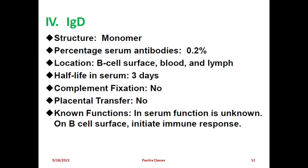IgD has a monomer structure. Its serum antibody percentage is 0.2%. Location is blood and lymph, and B cell surface. Half-life in serum is 3 days. Complement fixation is no; placental transfer is no. The function of IgD is currently unknown - researchers have not yet identified any particular function for this immunoglobulin and research is still ongoing.